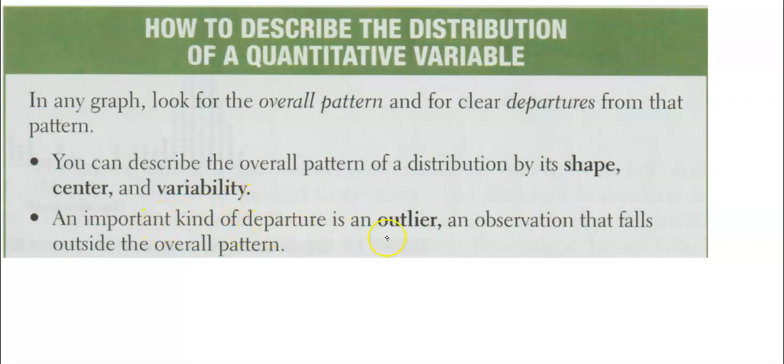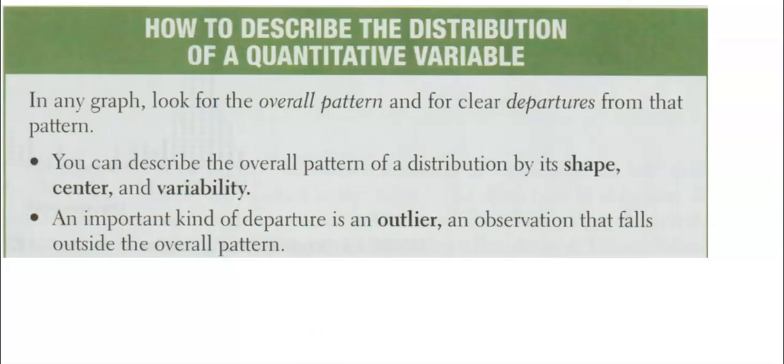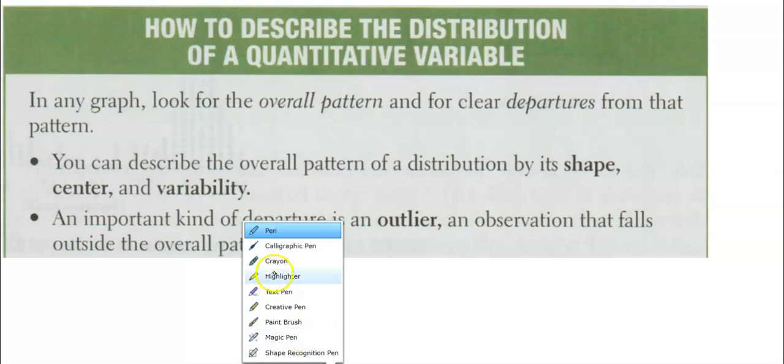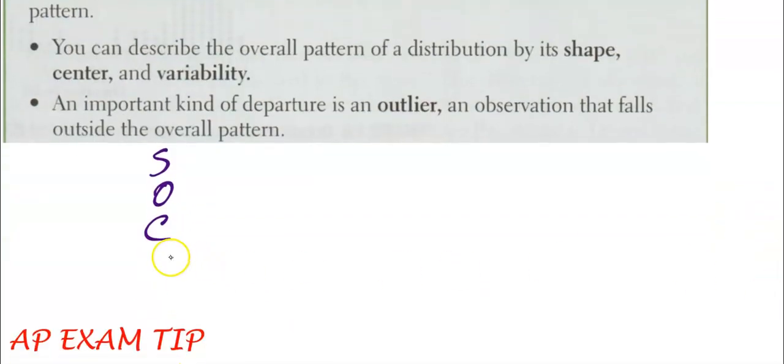An important kind of departure is called our outliers. What we are going to do—I call this SOCS. I'm not the only one who calls this SOCS, by the way. Lots of people call it SOCS. This is your reminder—you are going to describe the shape.